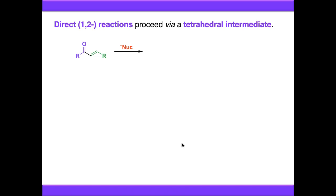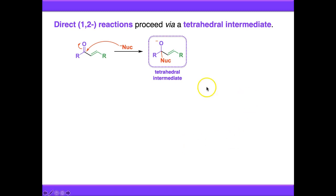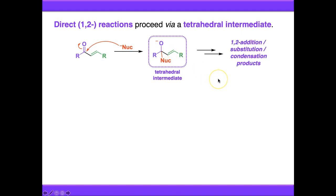1,2 reactions proceed via a tetrahedral intermediate. Direct attack from the nucleophile onto the carbonyl carbon kicks the electrons up onto oxygen, forming a tetrahedral intermediate. The structure of this intermediate — the nature of the groups immediately attached to that carbon — then dictates what happens next.